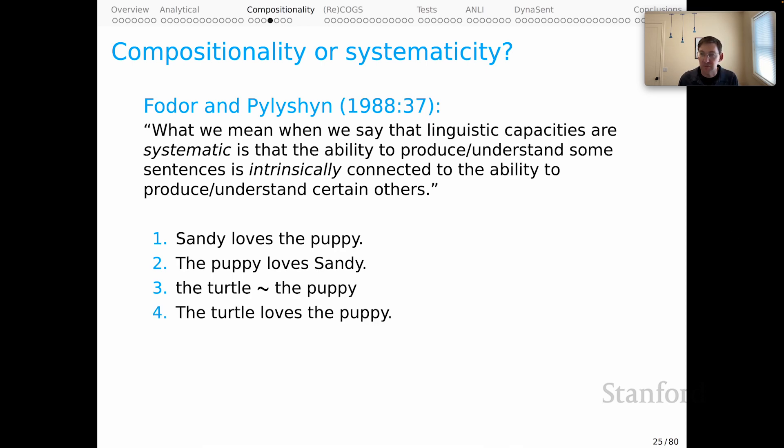And if you recognize that there is a certain distributional affinity between the turtle and the puppy, you can also instantly and effortlessly understand the turtle loves the puppy, the puppy loves the turtle, the turtle loves Sandy, and so forth and so on. You get this instant explosion in the number of things that you know, in some sense, as a consequence of your own understanding of language being so systematic. And I do think that compositionality could be a particular way of explaining what we observe about the systematicity of the human capacity for language.